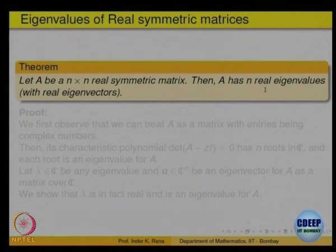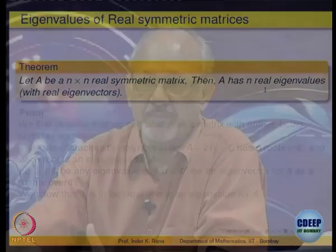By the fundamental theorem of algebra, a polynomial — real or complex, regardless of its coefficients — will have as many roots as its degree. But some of those roots may be complex. So the characteristic polynomial of a real matrix may not have real roots at all, or some roots may be complex.